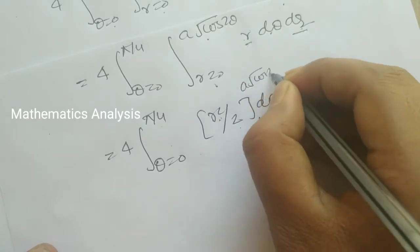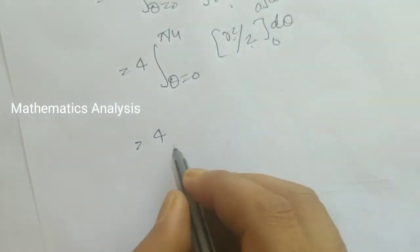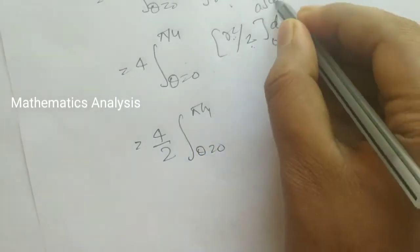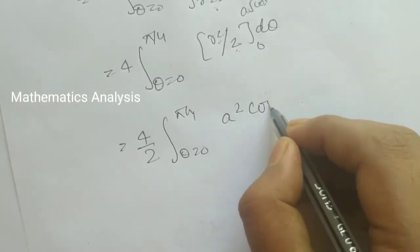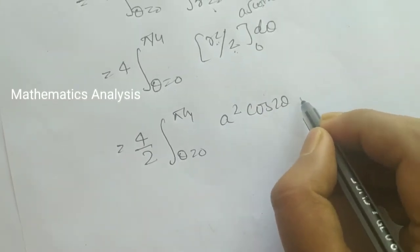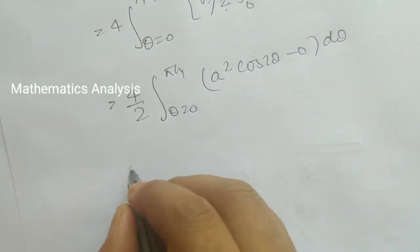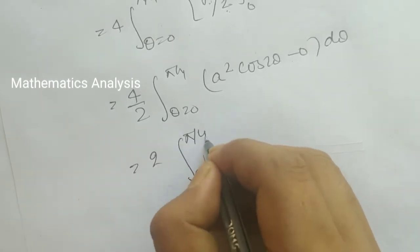From 0 to π/4, we have r squared by 2. The limit for r is 0 to square root a squared cos 2θ.